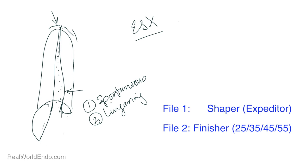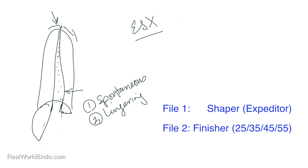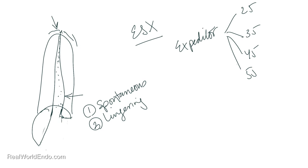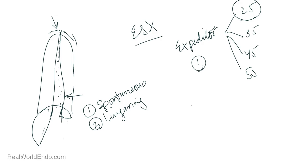The ESX system requires getting the expediter file to the apex first. Then you have a number of finishing files: a 25, a 35, a 45, and even a 55. For emergency procedures, what I have found is that if you just use the number one file — the expediter — get that to your working length, then finishing with just the 25 is adequate for most cases. It's very quick, you can remove the bulk of the tissue, and then you just place calcium hydroxide in the tooth and you'd be in good shape. So let's take a look at a clinical case for this technique.